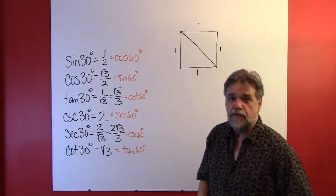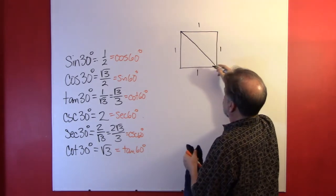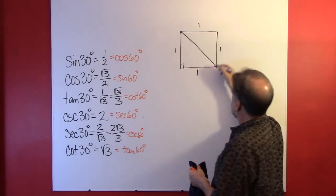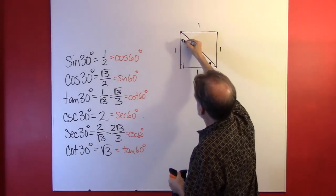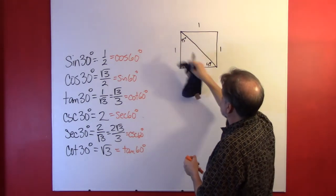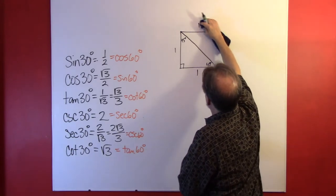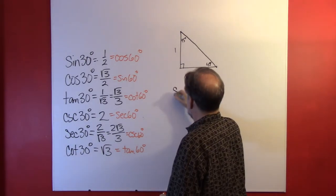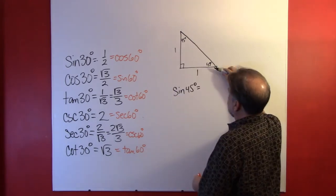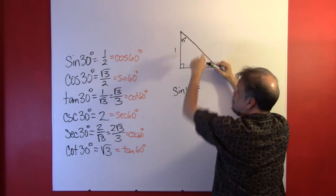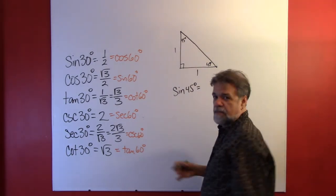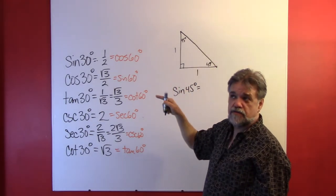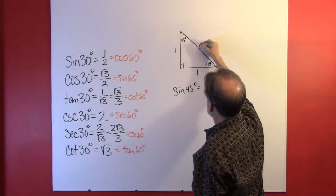I'm going to discard the top half. But first, let's note that this was a 90 degree angle that got cut in half, so it's 45 degrees — and that's true for this angle as well. Each of the legs is one. The Pythagorean theorem says one squared plus one squared equals the hypotenuse squared. One plus one is two, so the hypotenuse is the square root of two.